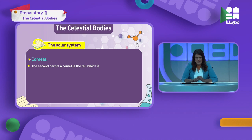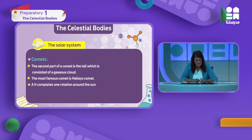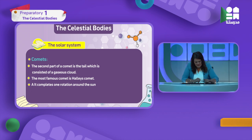The shining part around the comet - its tail - consists of a gases cloud. The most famous comet is Halley's Comet. It completes one full rotation around the sun every 76 years - every 76 years it completes one cycle around the sun.